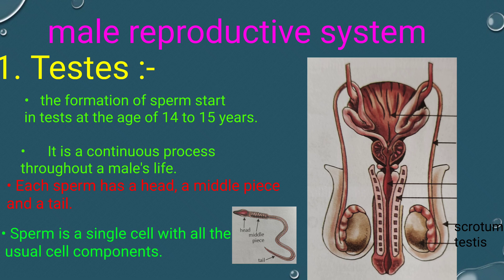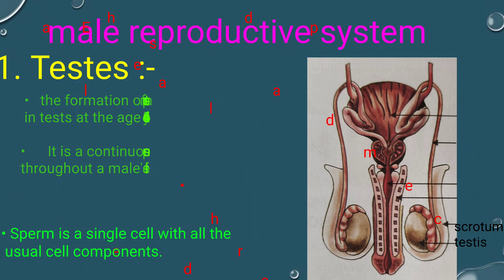Each sperm has a head, a middle piece, and a tail. Sperm is a single cell with all the usual cell components.